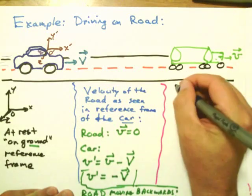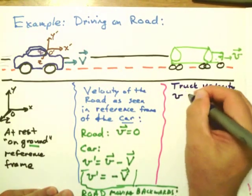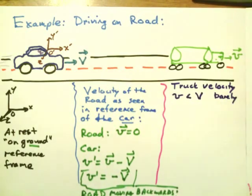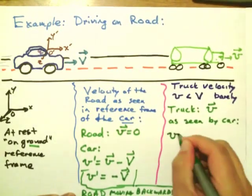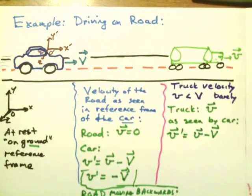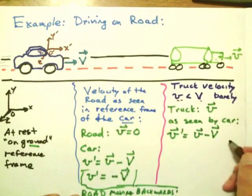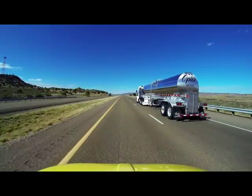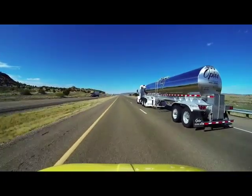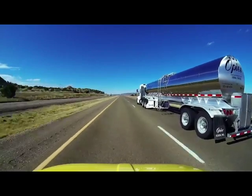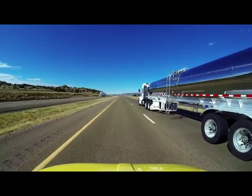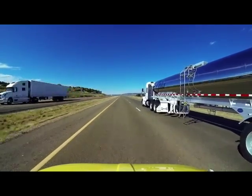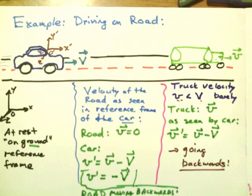Likewise, if the truck has a velocity little v that is slightly less than the car's velocity capital V, then in the car frame V-prime equals little v minus big V, which is negative. The truck appears to be going backwards — as we're catching up to the truck, since we're going faster, in our reference frame the truck is moving backwards at a speed corresponding to little v minus capital V. That's an example of an inertial reference frame.